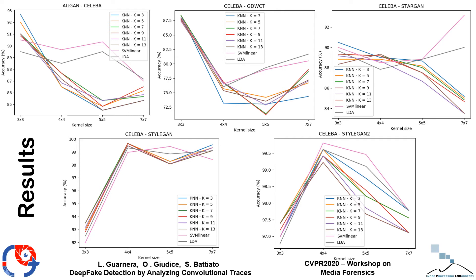Please notice that the most significant parameter is the dimension of the kernel used by the EM algorithm. This is related to the convolutional traces left by the generation process, which are specific for each generative technique.